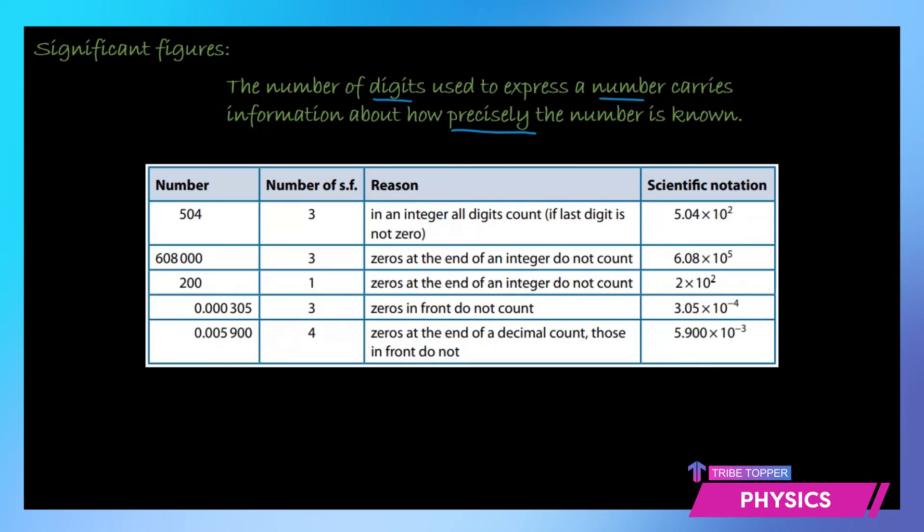So for example I have 504. So 5 and 4 will definitely be countable. They are significant figures because they are non-zero and a zero which comes in between two non-zero digits is always significant. So the number 504 has three significant figures because it has two non-zero digits and the 0 lies between the two non-zero.